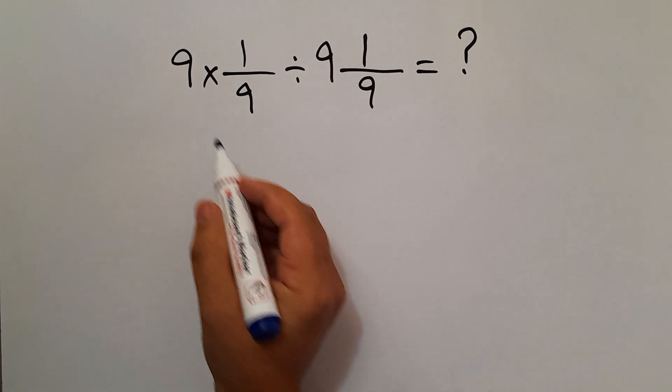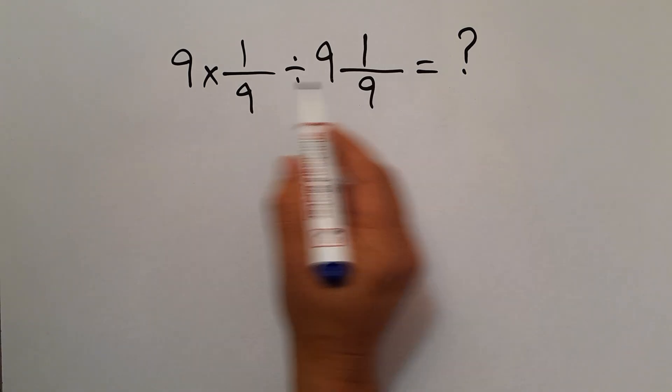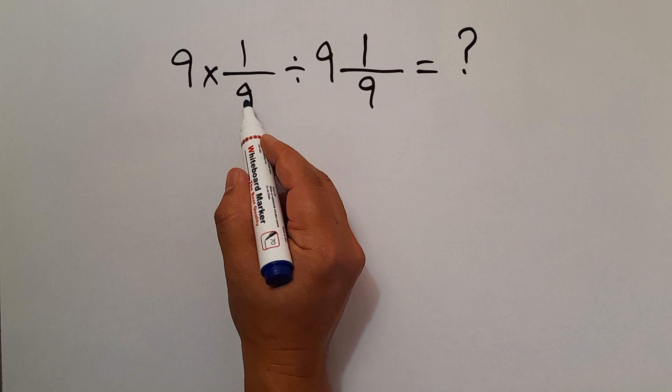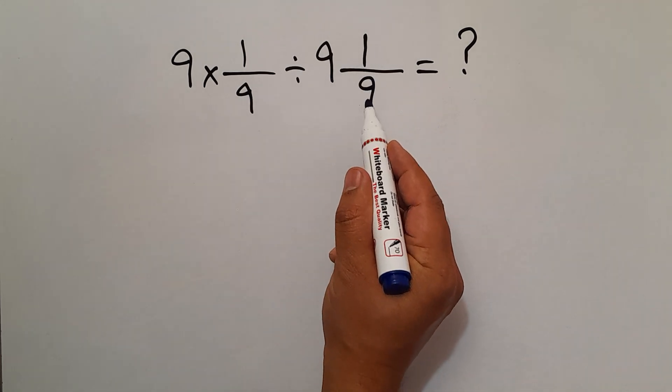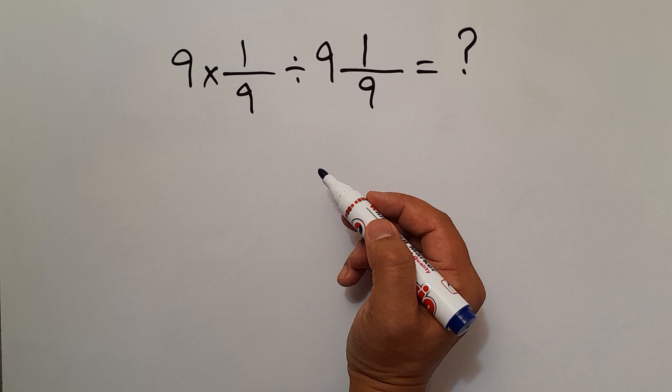Hey guys and welcome to this video. In this video we want to find the value of this expression: 9 × 1/9 ÷ 9 1/9. Are you ready to solve? Let's go.